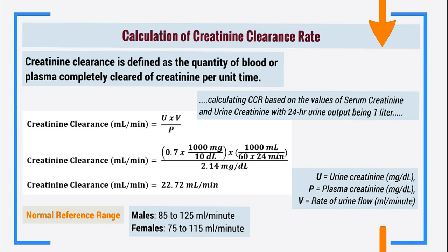To interpret this result, we compare with the normal reference range. This patient is female; the normal reference range for females is 75 to 115 mL/min, and for males it is 85 to 125 mL/min. The ranges differ because males have greater muscle mass, leading to higher urinary excretion of creatinine and therefore a higher creatinine clearance. Our patient's value of 22.72 mL/min is well below the lower limit of the normal reference range, confirming significantly reduced kidney function.